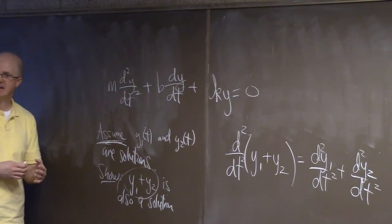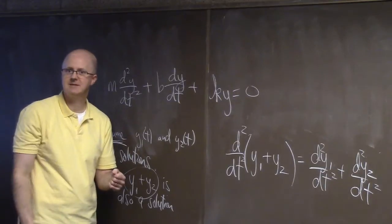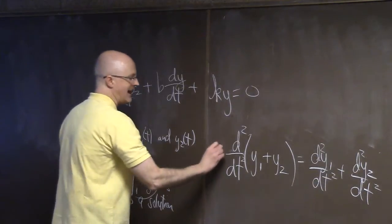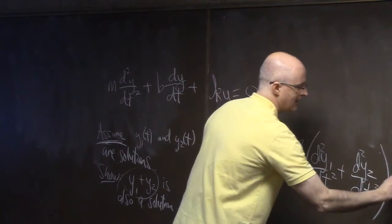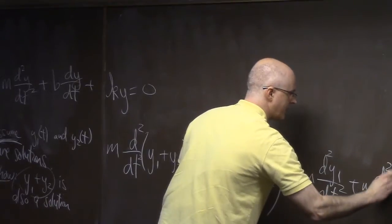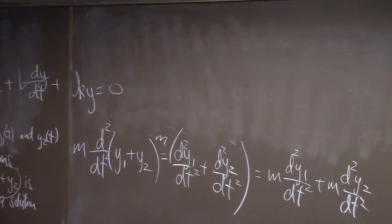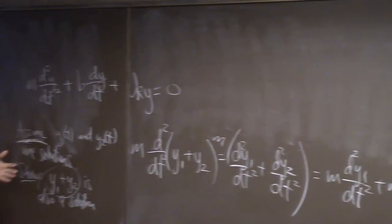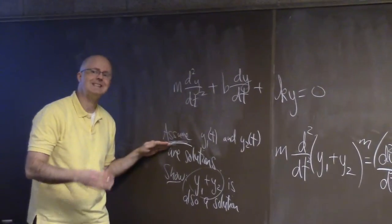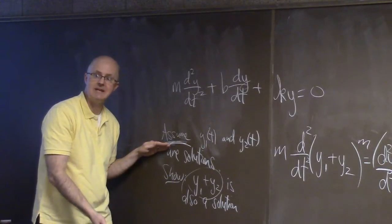You need to use your assumptions — you're assuming these two things are both solutions, so when you substitute them into the left-hand side you get zero for all t. You also need linearity of the derivative operator. For example, the derivative of y1 plus y2 is the derivative of y1 plus the derivative of y2, and that works for second derivatives too. You'll also need some algebra facts — technically the commutative property and the distributive property.